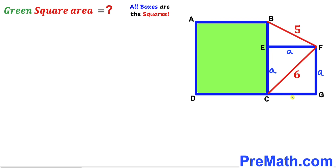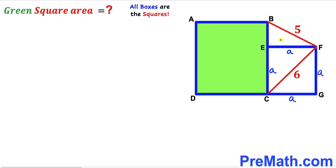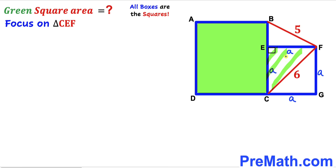Since we are dealing with this square, this angle is a 45 degree angle. However, we are not sure about this other angle, so this whole angle is not necessarily 90 degrees — it is not. Therefore this is not a right triangle, and we cannot apply the Pythagorean theorem on it. Bear in mind that this angle is a 90 degree angle since we are dealing with this square, so let's focus on right triangle CEF.